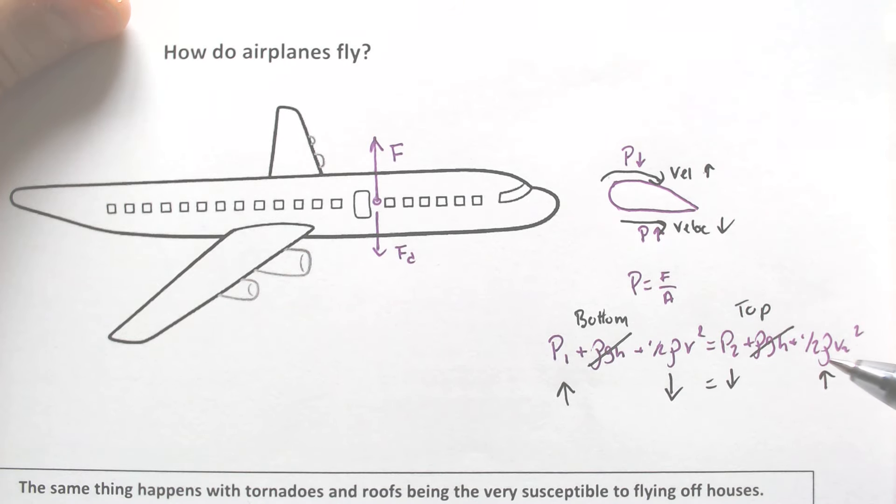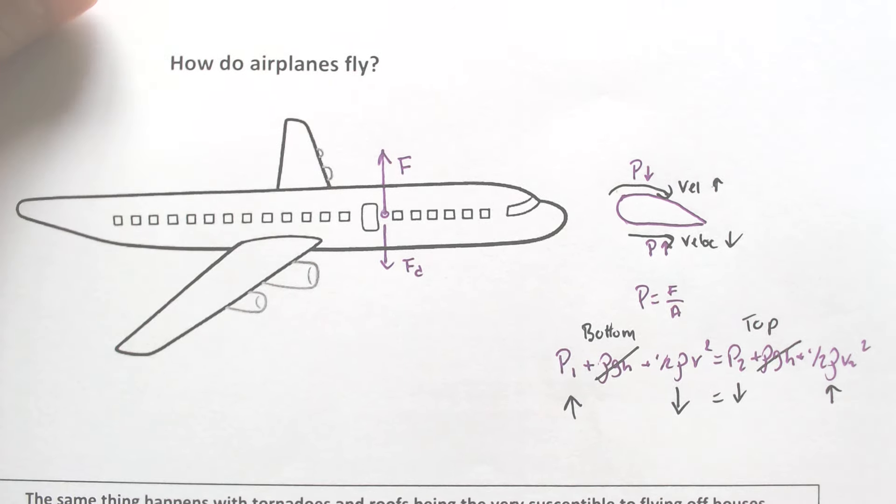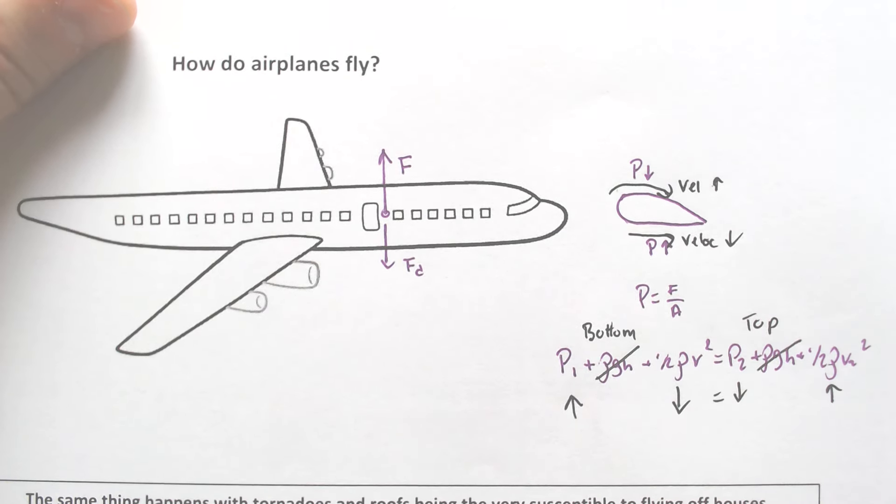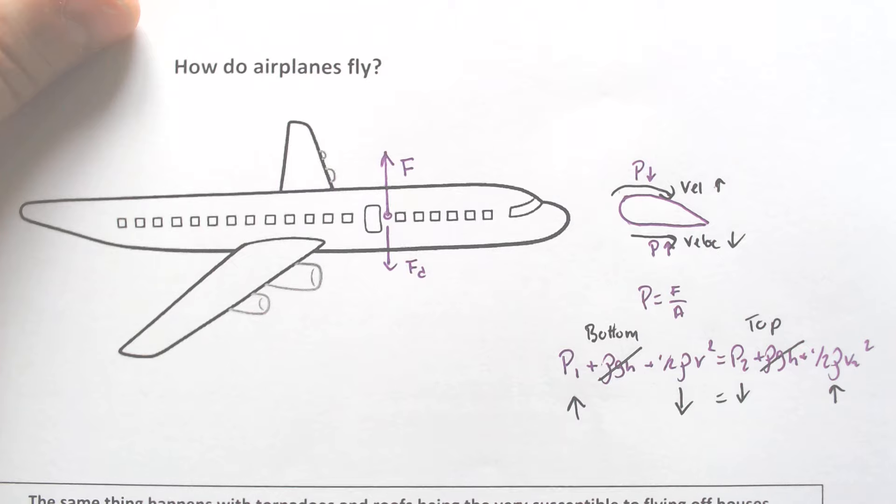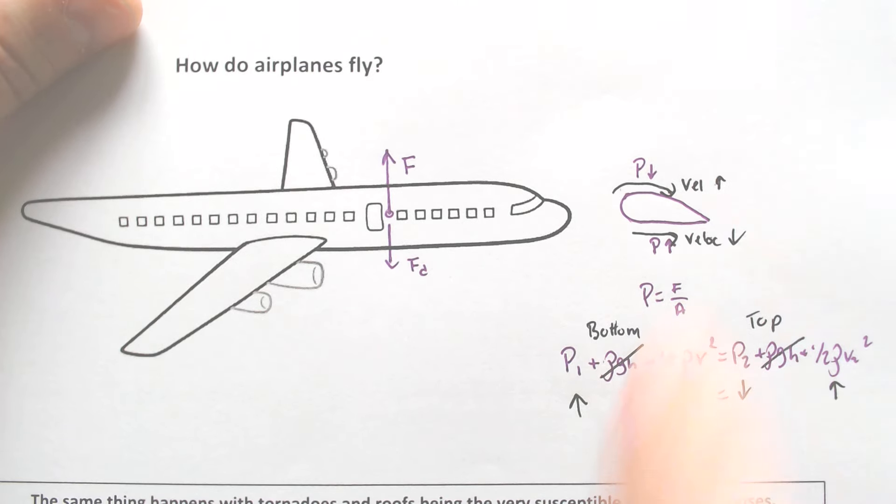That curvature of the wing has determined that it actually applies a force centripetal, and that force centripetal, circular motion, is going to apply an increase in tangential velocity, which allows the planes to fly. It's as simple as that.